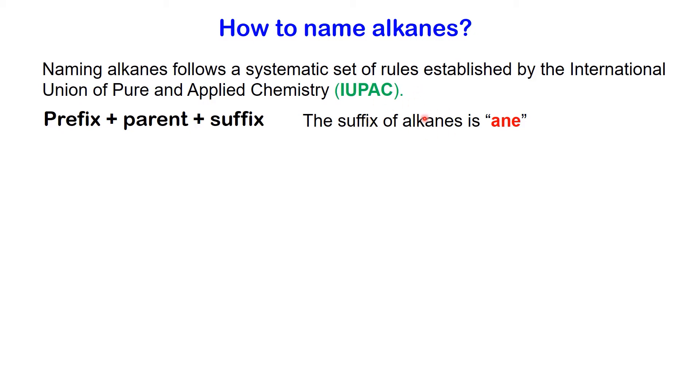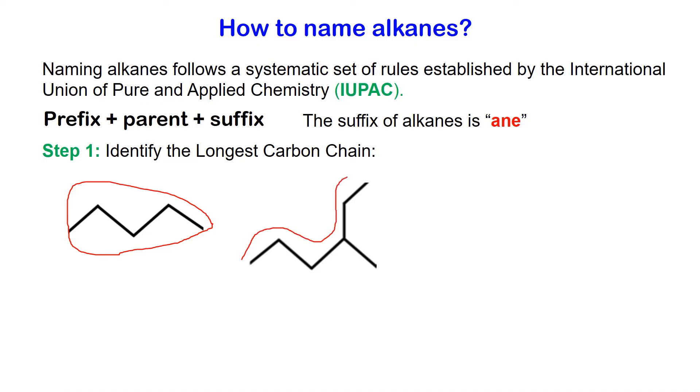The first step to name an alkane is to identify the longest carbon chain, which becomes the main or parent chain. Let's take examples. Consider the first molecule, which is a linear alkane. It possesses the longest continuous chain consisting of five carbon atoms. For the second molecule, it's a branched alkane. This is the longest chain containing six carbon atoms.